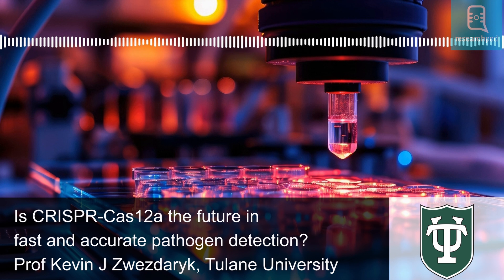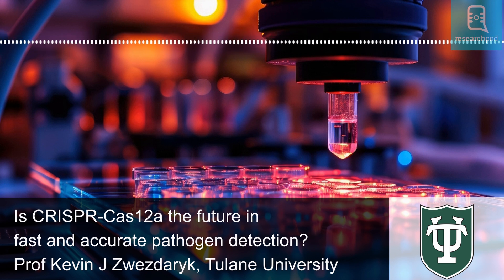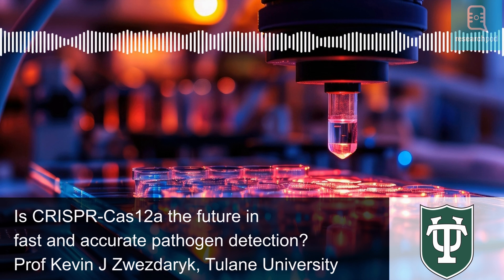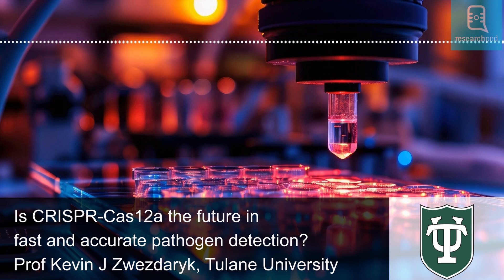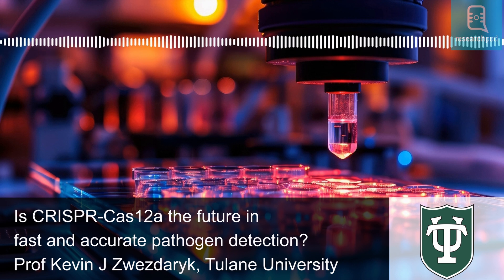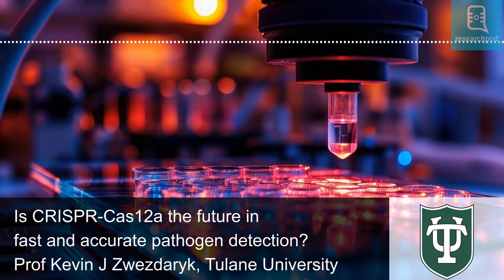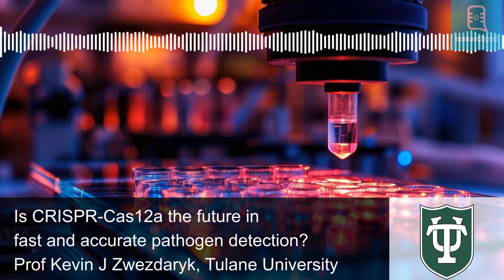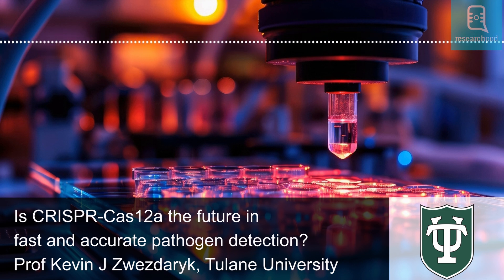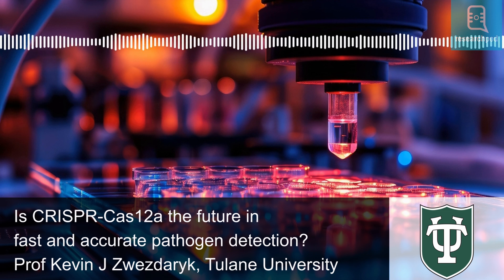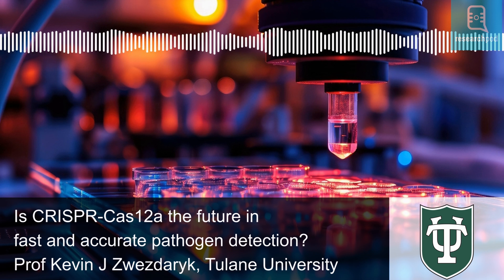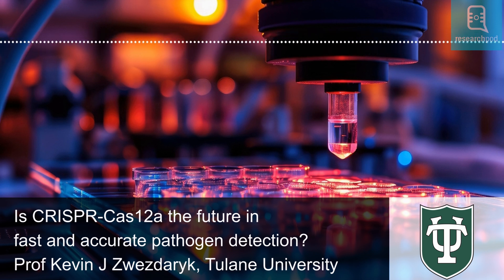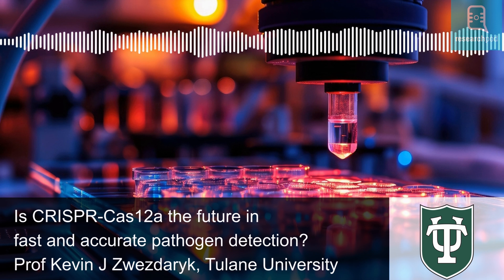CRISPR is a method that scientists use to perform gene editing by identifying a specific section of a gene, cutting it off and replacing it accordingly. This enables them to rectify faulty genes that cause defects and diseases in humans and other organisms. The CRISPR method is based on the defense systems of bacteria against their invading viruses and uses enzymes called CRISPR-associated proteins, or Cas proteins, which function as molecular scissors that cut out viral DNA.